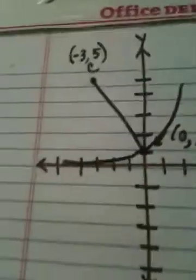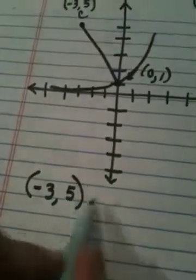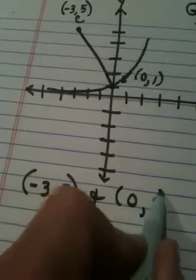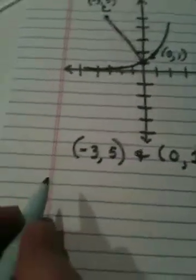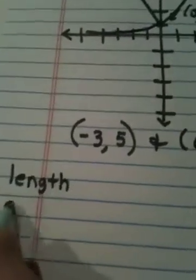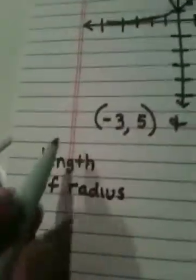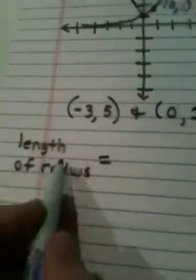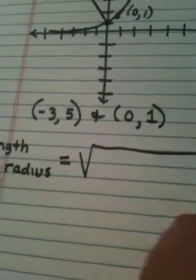The length of the radius, by using the distance formula. So I'm going to take these two points, the center of the circle and the boundary point, and I'm going to plug them into the distance formula. Now, this time, the distance formula is actually going to give me the length of the radius of the circle.